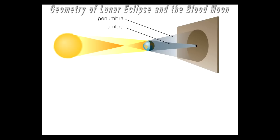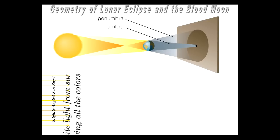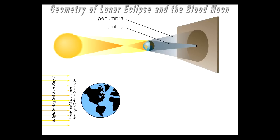The geometry of a lunar eclipse clearly shows the penumbra, the umbra, and the basic geometry of rays coming from the Sun. Total blockage of the Sun only occurs in the umbral region. This raises the question: what produces that reddish moon?